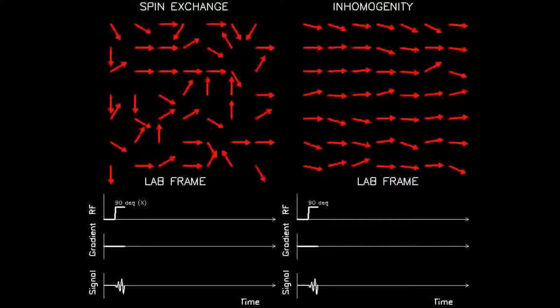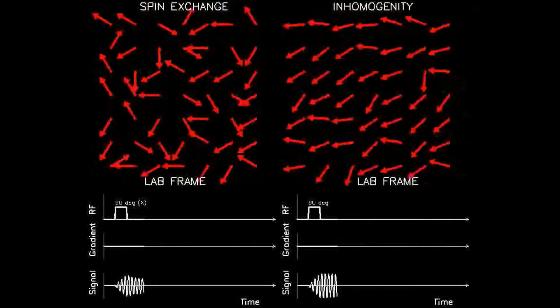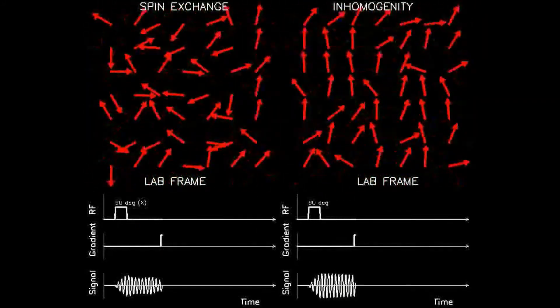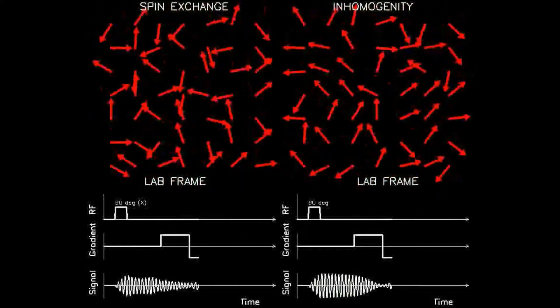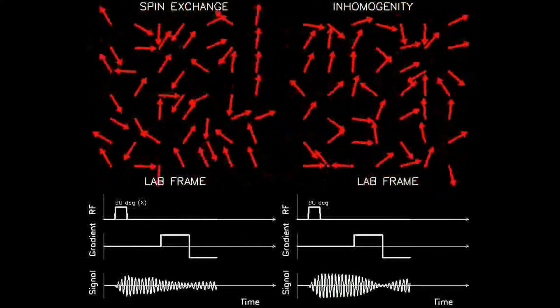The two most common methods to produce a signal are the spin echo and gradient echo. This animation represents the latter method using a gradient echo, whereas the previous animation illustrated the spin echo.